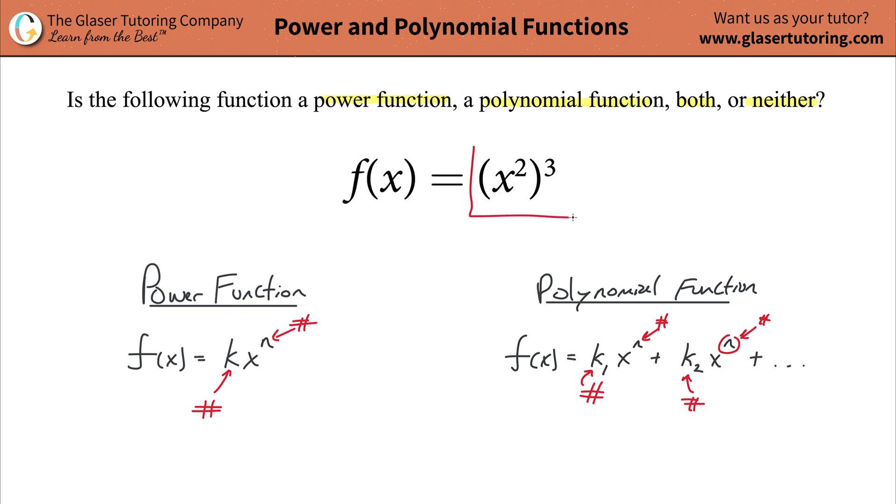The reason why is because if you can do any type of math, any type of simplification on this to get it to match one of these two, you must do that before you can come to a conclusion. We basically have x squared raised to the third.